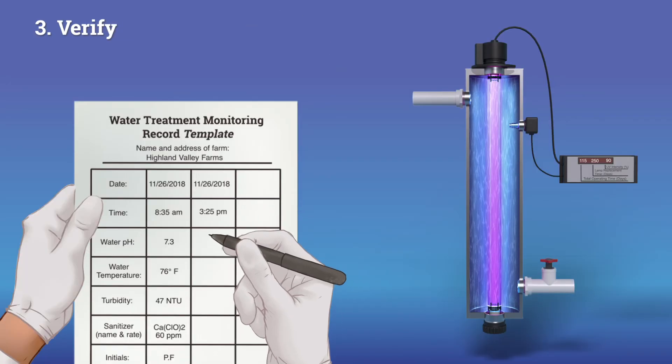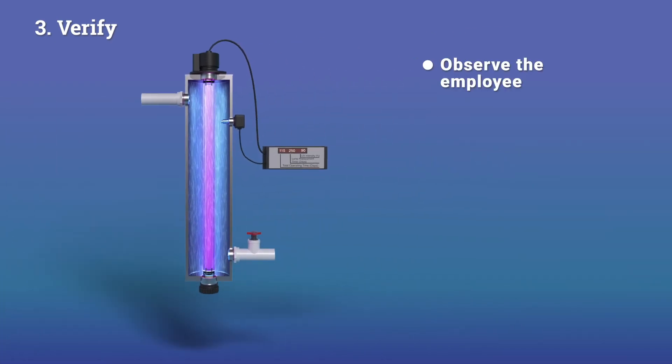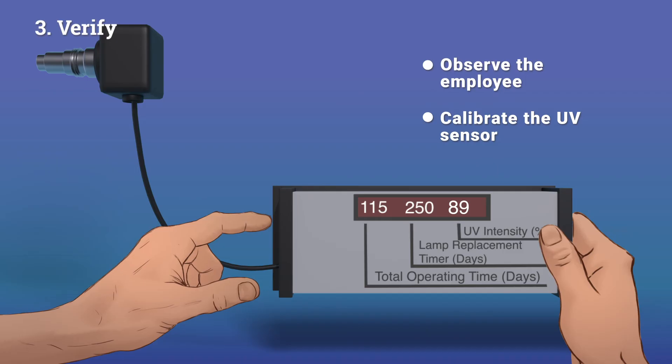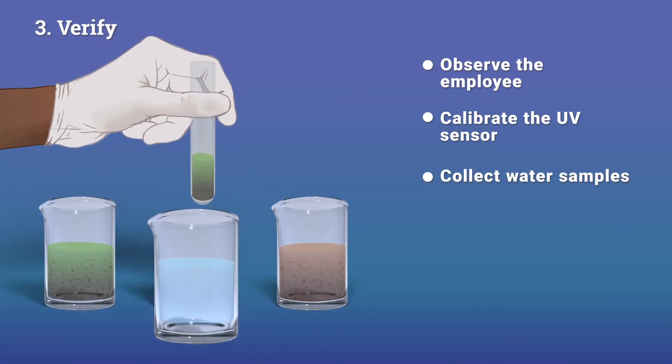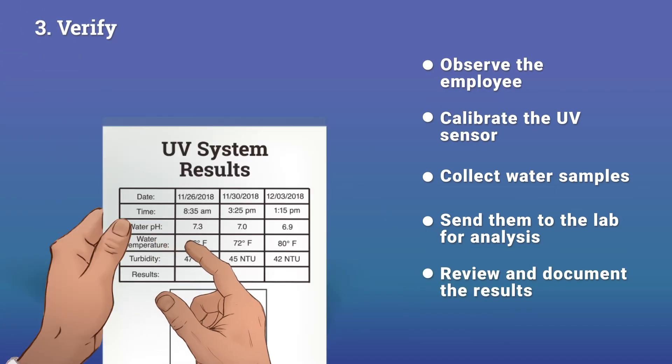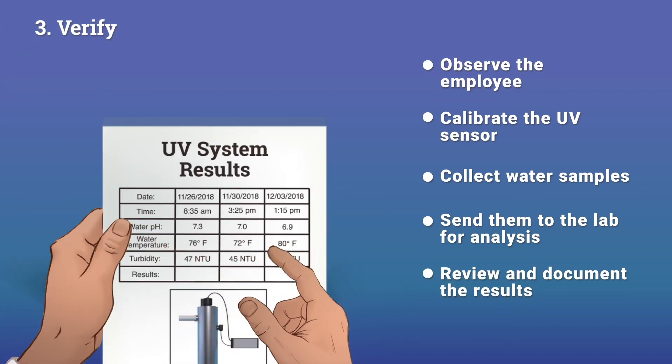Verify that your system is working as expected. Observe the employee monitoring the system. Calibrate the UV sensor per manufacturer recommendations. Collect water samples, send them to the lab for microbiological analysis, and review and document the results that the lab passes along.